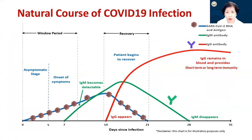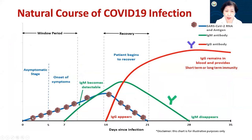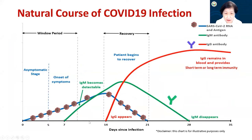Now we look at the natural course of COVID-19 infection as we know it now — I say now because it may change. We have the window period and the recovery phase. The window period is when you have no symptoms — this is the asymptomatic stage — but you can begin to detect some viruses, though it will depend on the limit of detection of your kit.